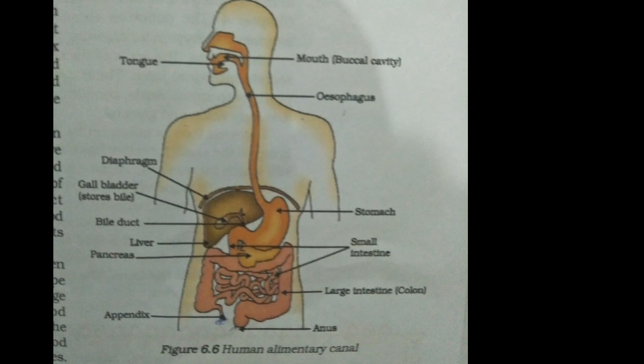The absorbed nutrients are utilized for obtaining energy, building new tissues, and repairing old tissues. The absorbed food is then sent into the large intestine, where its walls absorb more water from the material. The rest of the material is removed from the body via the anus. The exit of this waste material is regulated by the anal sphincter.